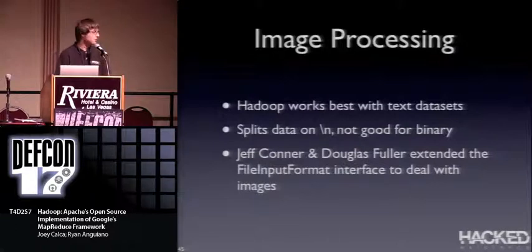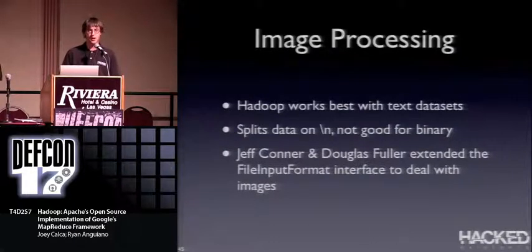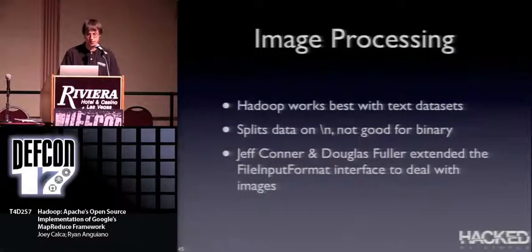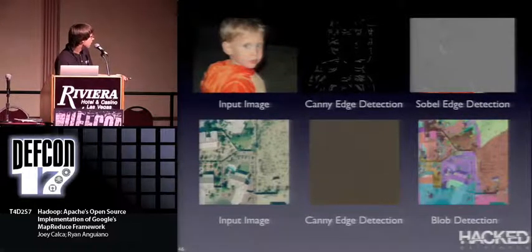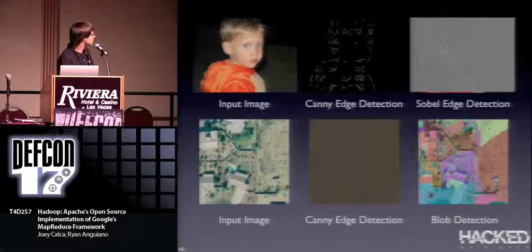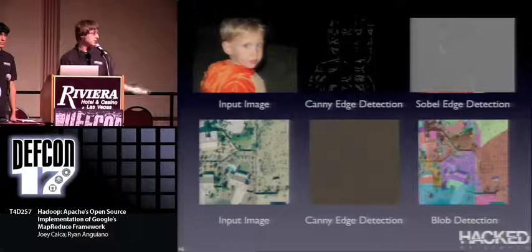Another project from the ASU cloud computing class involved image processing — interesting because Hadoop is completely text-file-based and data splits on line breaks, making it poorly suited for binary files. Jeff Conner and Douglas Fuller extended the file input format interface to handle images. They ran a canny edge detection algorithm and a different edge detection algorithm targeting blob detection — the goal being to take massive NASA data sets of Earth's surface and find regions matching a target image. Hadoop is a really good framework for this kind of processing.